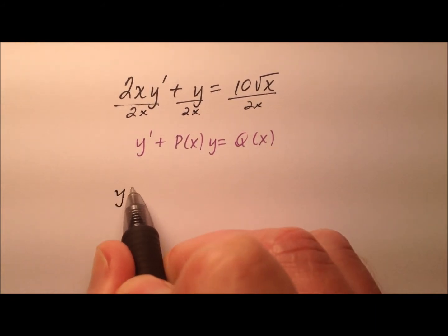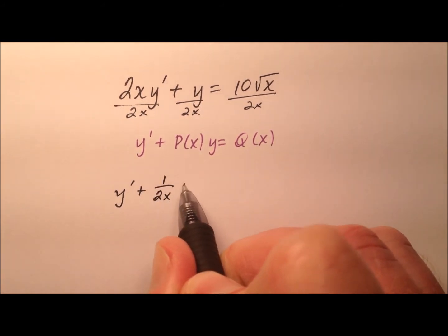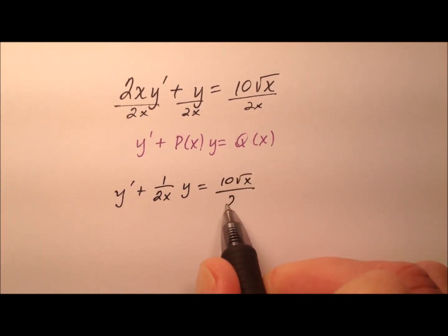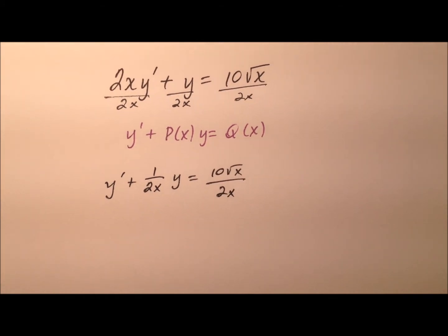So when I rewrite this, I'll have y prime plus 1 over 2x times y equals 10 times the square root of x over 2x, which I can go ahead and simplify. I'm going to leave that for a moment and work my integrating factor first.